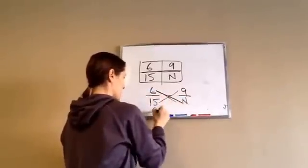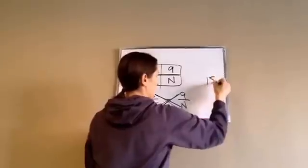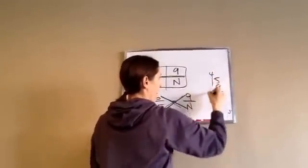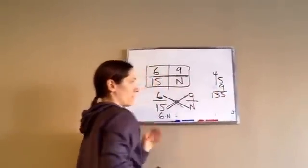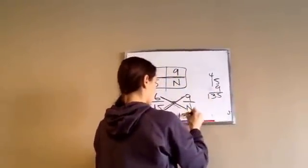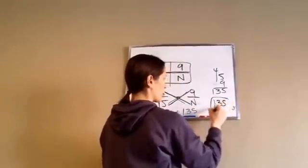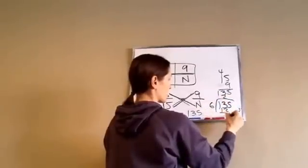So, this is 6 times N. 6 times N equals 15 times 9. 135. So, 6 times N equals 135. So, we're going to take 135 divided by 6.